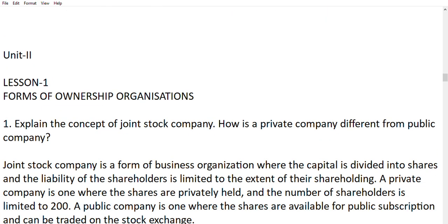Now moving to Unit 2, Lesson 1: forms of ownership organizations. First question: explain the concept of joint stock company and how is a private company different from a public company. A joint stock company is a form of business organization where the capital is divided into shares and the liability of shareholders is limited to the extent of their shareholding. A private company is where shares are privately held and the number of shareholders is limited to 200. A public company is where shares are available for public subscription and can be traded on the stock exchange.